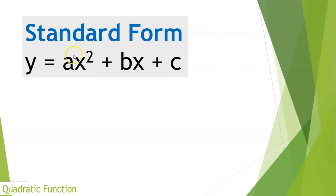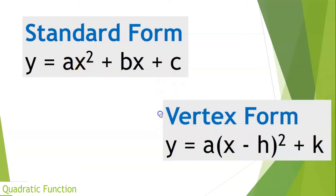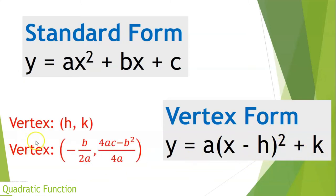The standard form of a quadratic equation is given as y = ax² + bx + c. The other form is the vertex form, given as y = a(x − h)² + k, where h and k are considered as the vertex. Another way of finding the vertex h and k is: h = −b / 2a, and k = (4ac − b²) / 4a.